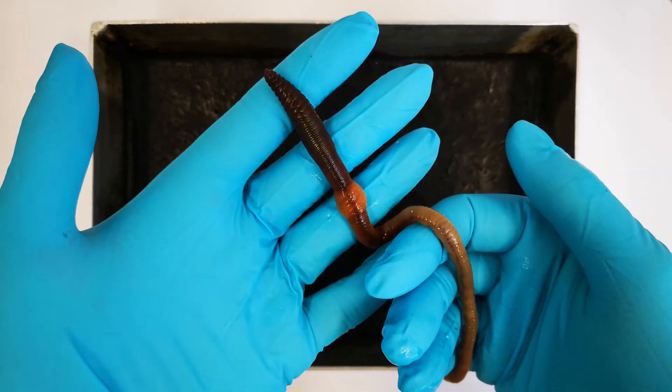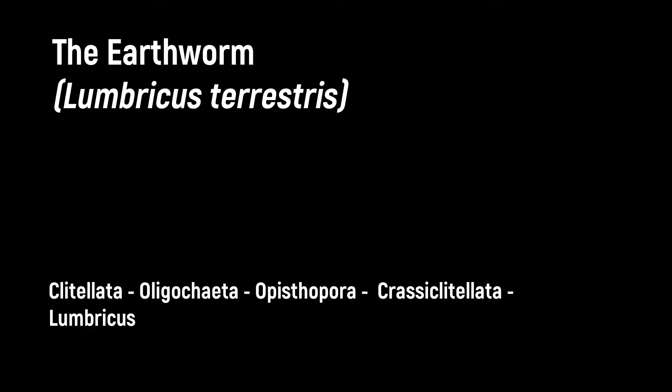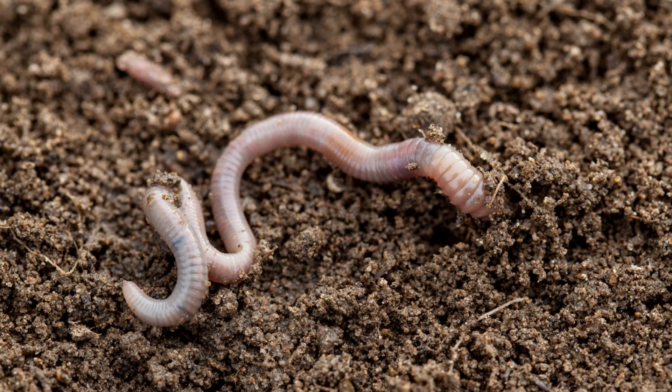Our dissection object is the common earthworm, Lumbricus terrestris, also called the nightcrawler in the northeastern United States. Earthworms form the family Lumbricidae within subclass Clitellata within the phylum Annelida. The common earthworm is native to Europe; as an introduced species, it is now also found in Canada and the northern United States, and locally in several other continents.